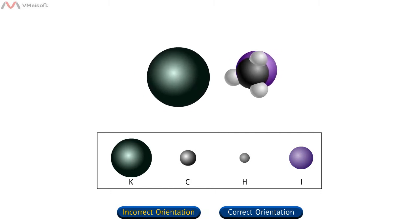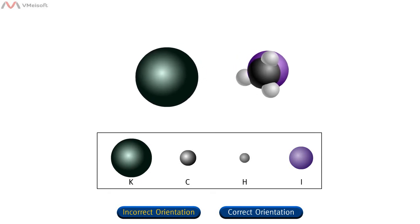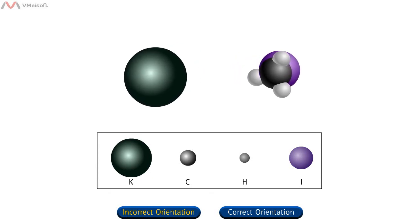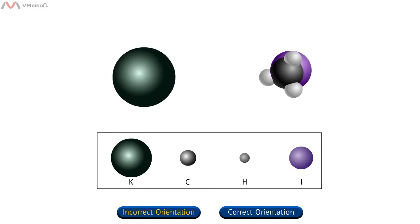the potassium atom collided with one of the hydrogen atoms of CH3I. With this collision orientation, few or no products are formed.